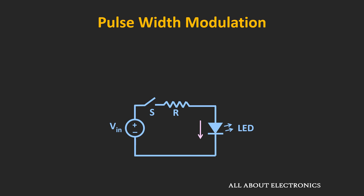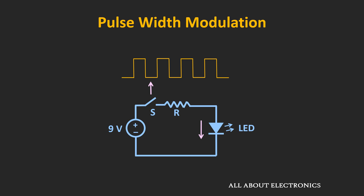Let us say we want to control the brightness of an LED using this pulse width modulation technique. Here, an electronic switch is connected between the voltage source and the LED circuit, and this electronic switch is controlled using an external control signal. Whenever the switch is in the closed condition, the entire voltage will appear across the LED circuit. Let us assume we are using a 9V battery. Whenever the switch is in the open condition, the circuit gets isolated from the voltage supply. Now if we apply a control voltage, the switch will get turned on and off very rapidly.